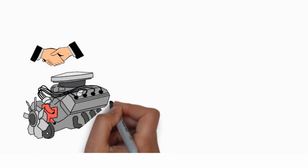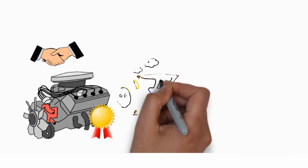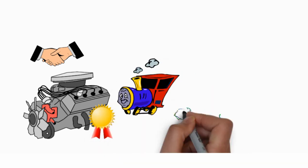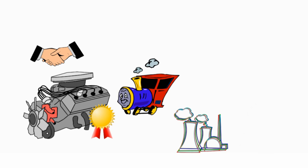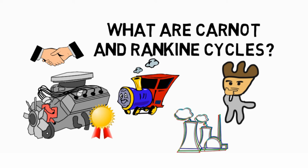Welcome back to Mechanical AI. The Carnot cycle is the most efficient heat engine, and the Rankine cycle is what powered the steam engines of the past and the thermal power plants of the present. This makes us wonder, what are Carnot and Rankine cycles?